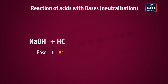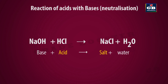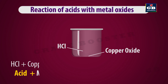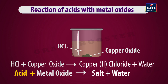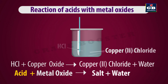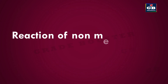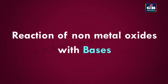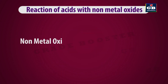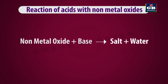Reaction between acids and bases: when a base reacts with an acid, it forms salt and water. Reaction of metal oxides with acids: metal oxide reacts with acid and forms salt plus water. Reaction of non-metal oxides with base: a base reacts with a non-metal oxide and forms salt and water.